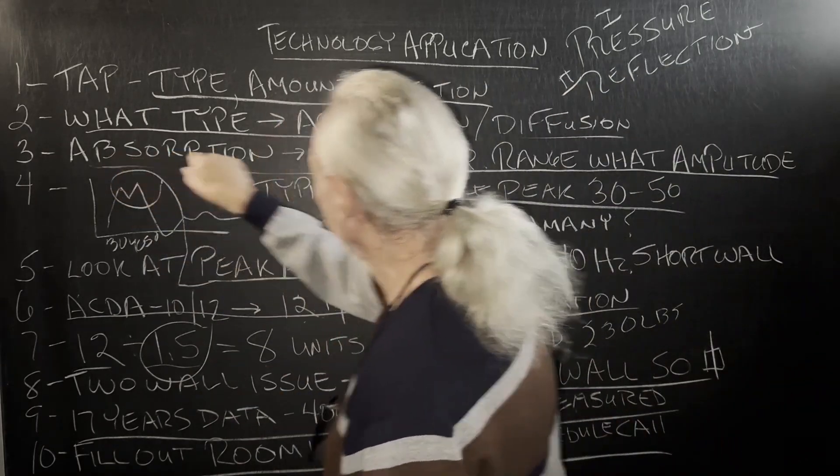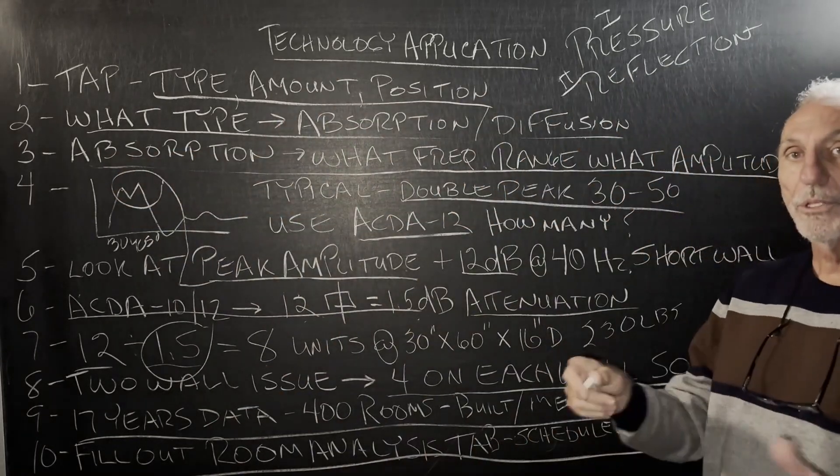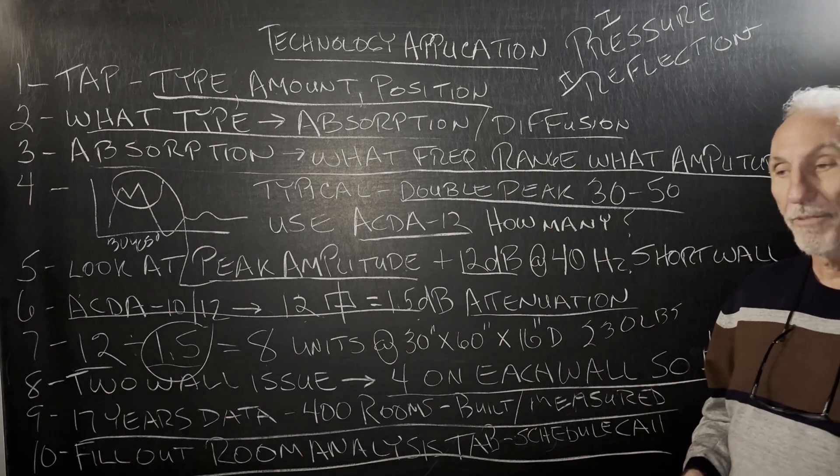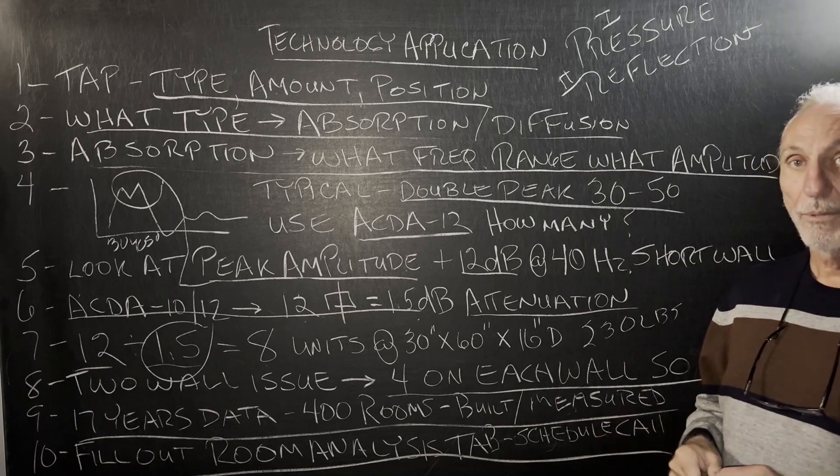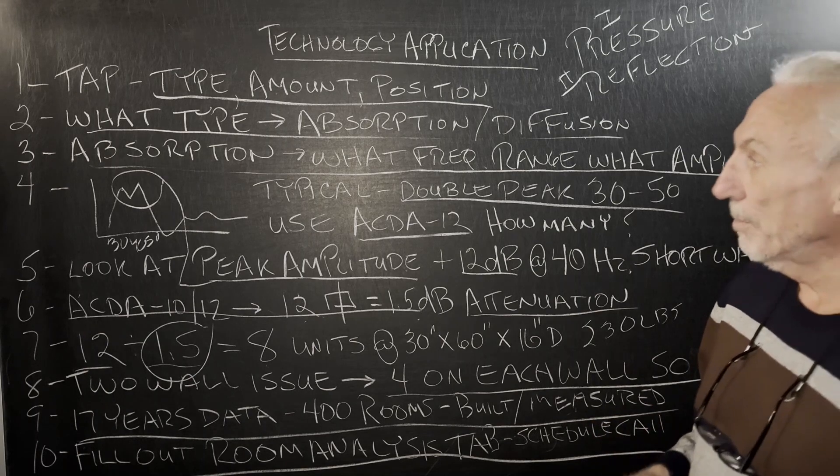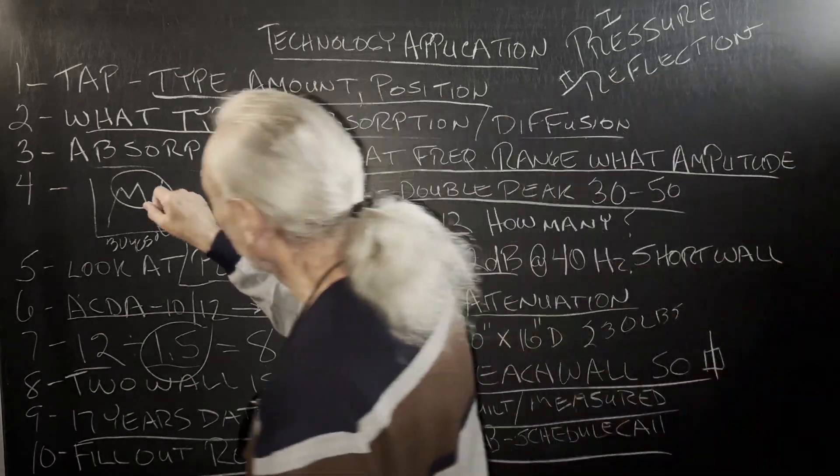So absorption, what frequency range and what amplitude is the problem? That's what we have to figure out. Where is the problem? Maybe it's one frequency, but it's usually a range. So let's look at a typical curve here.